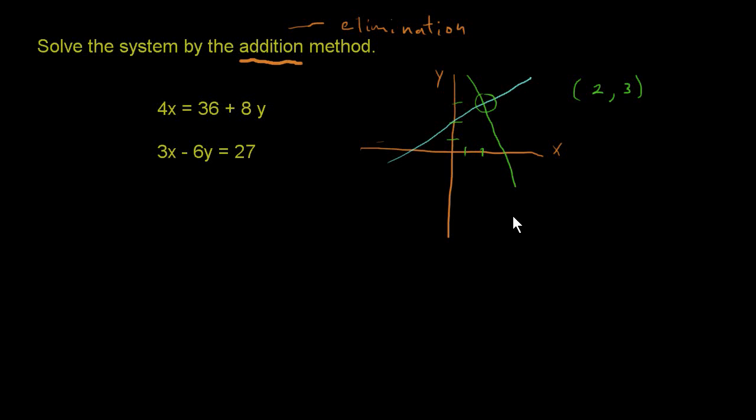When we're doing the elimination or addition method, as we're solving, we'll get something like x equals 2 and then go back and find out what y is. Or when we do our elimination, we might end up with something like y equals 3. That's what our answers will look like when we're doing the elimination method or addition method.